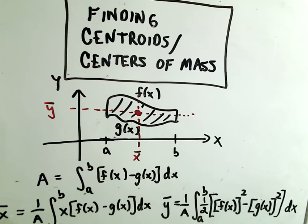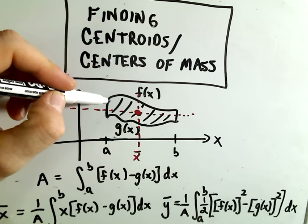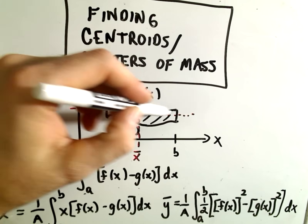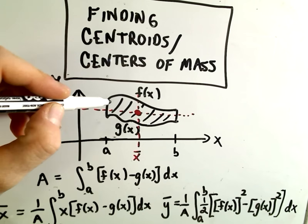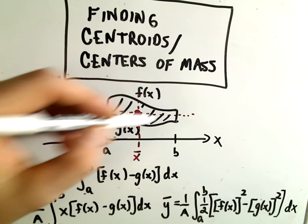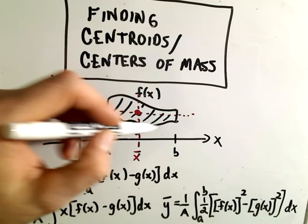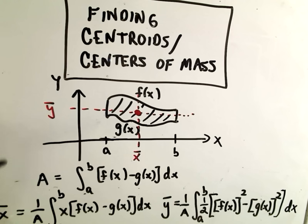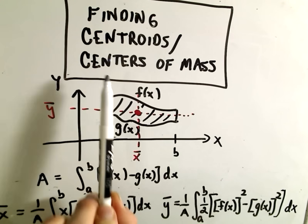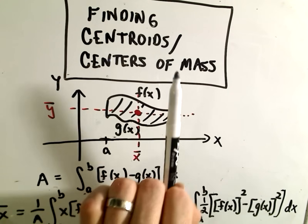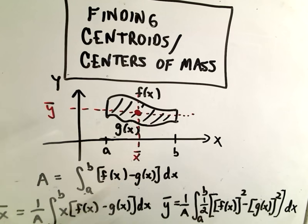In this video I'm going to talk about finding centroids and centers of mass. Suppose we have a curve y equals f of x — that's the function on top — and then we have a curve y equals g of x. The region is bounded in between these two curves, the line x equals a and the line x equals b.